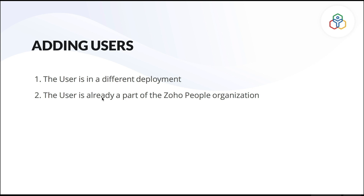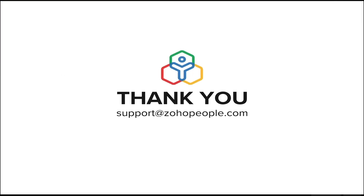The second issue: the user is already a part of the Zoho People organization. In this case, the user has accepted the invite already and you are trying to add them again, or it could be an ex-employee who is already a part of your organization. Please check on these cases to add users to your Zoho People account successfully. Thank you for watching. Stay tuned for more.